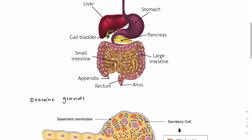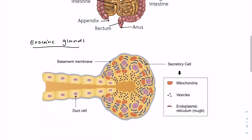Let's do a quick overview of what exocrine glands are. Exocrine glands basically produce and secrete substances via a duct onto an epithelial surface. This can either be the surface of the body, such as sweat glands and sebaceous glands, or the lumen of the digestive tract and gut, which is the digestive glands — what we're going to be talking about today. Exocrine glands are composed of cells called acini, which are secretory cells involved in the secretion of these substances.